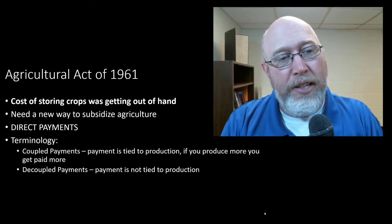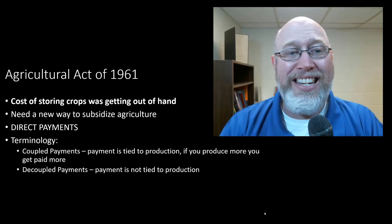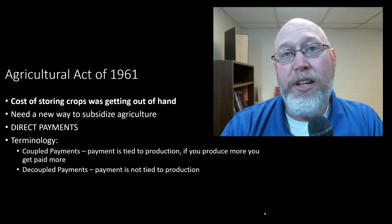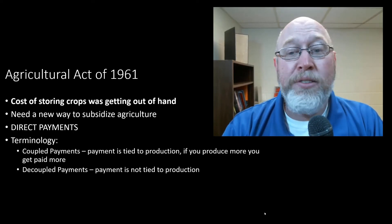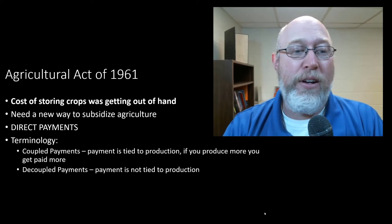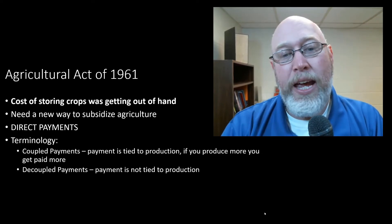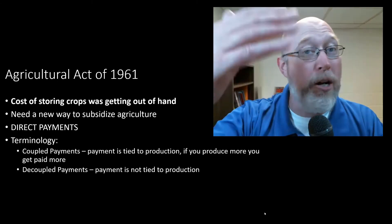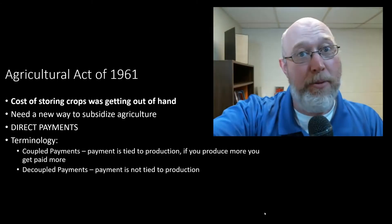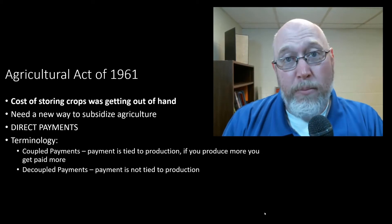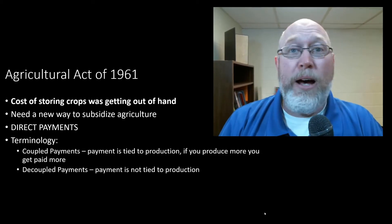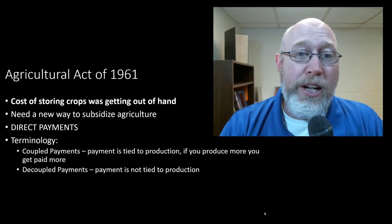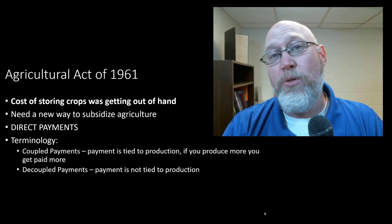Some other things that start to pop up in the story of the 1960s is the concept of a direct payment — the idea of instead of propping up the price, just paying the farmer directly. Here's some terminology you need to know: coupled payment versus decoupled payment. A coupled payment means that the payment you get from the federal government — whether it's a direct payment or a higher market price due to the CCC propping up the price — the more you produce, the bigger payments you get. Your payment is tied to the amount you produce in a given year.